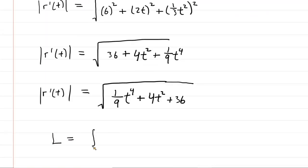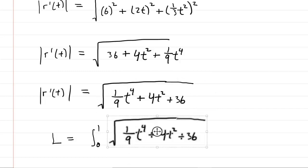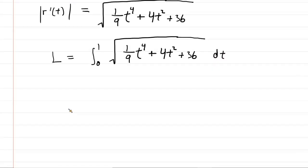We would say L is equal to the integral from 0 to 1 of this magnitude right here of the r prime of t. And then we're integrating with respect to t. So, we put dt here. Now, this integral at first looks somewhat challenging, but there is a miraculous trick to it. It turns out that it will factor relatively easily.